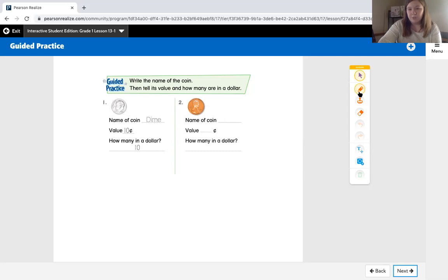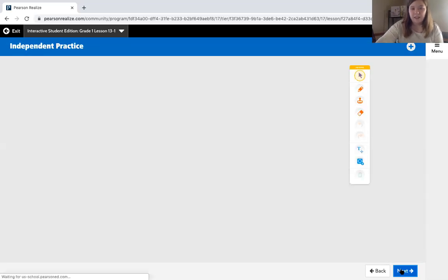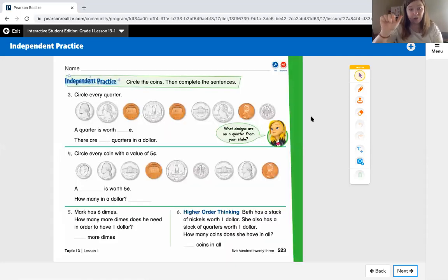Next is number two. It asks for the name of the coin. I see that it's a bronze color, so I know right away that the only choice would be penny. How much is a penny worth? The value of a penny is one cent. And how many pennies are in a dollar? I know that there are 100 pennies in a dollar. These will be similar questions to what you will have on your quick check, so make sure that you are paying attention.